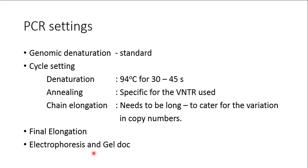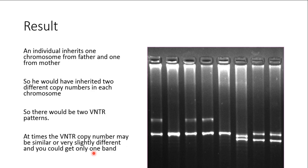Regarding results: an individual inherits one chromosome from the father and one from the mother, so they would have inherited two different copy numbers, resulting in two VNTR patterns. The VNTR copy numbers may be very similar or slightly different. Here you can see two discrete bands — these represent the two VNTR copies, one inherited from the father and the other from the mother.